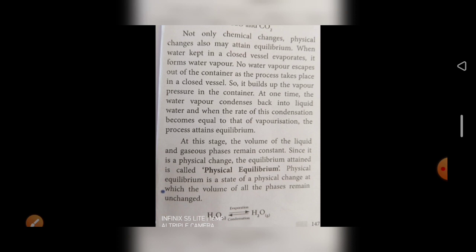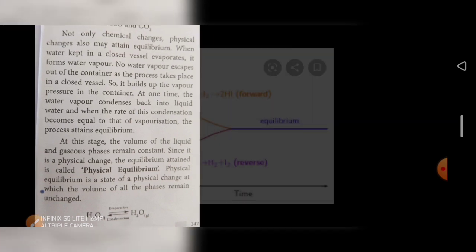At this stage, the volume of the liquid and the gaseous phase remains constant — the two states also remain constant. This is called physical equilibrium. Physical equilibrium is a state of physical change in which the volume of all phases remains unchanged. That is, H₂O gives H₂O gas when it evaporates, and when it condenses it gives liquid water.